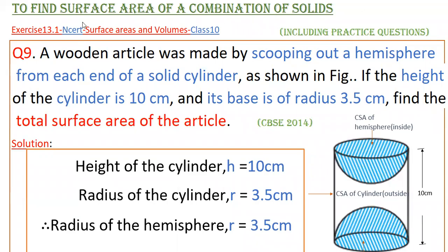Hello everyone. Today I am going to tell the solution of the 9th problem from Exercise 13.1 from NCERT, Surface Areas and Volumes, Class 10. A wooden article was made by scooping out a hemisphere from each end of a solid cylinder as shown in the figure. The height of the cylinder is 10 centimeters and its base radius is 3.5 centimeters. Find the total surface area of the article.